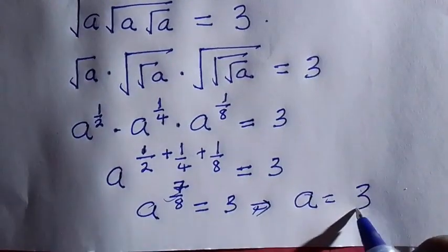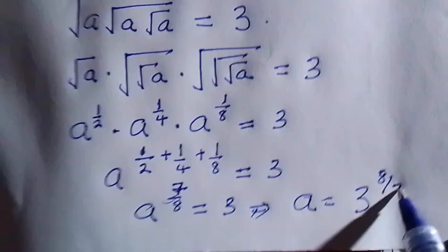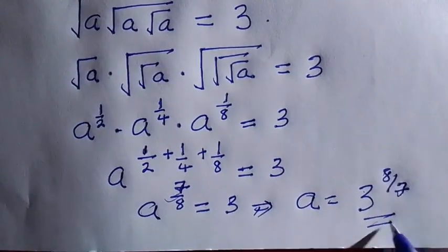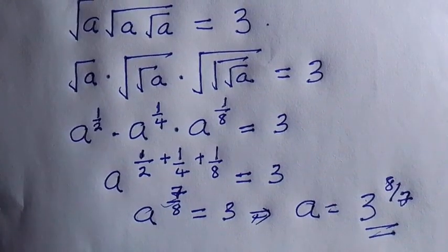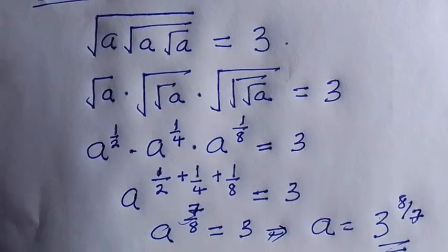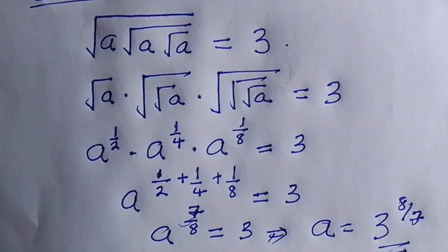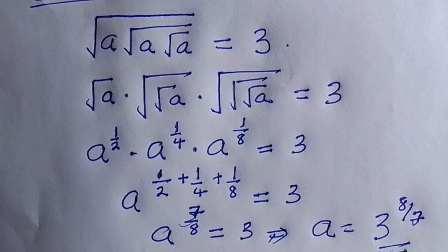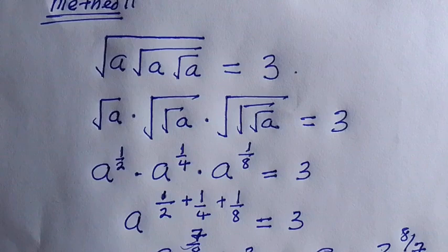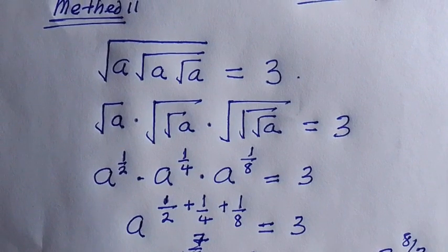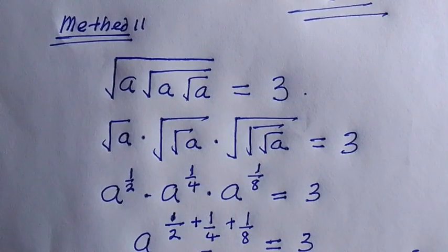So when we find the LCM here, which is 8, and do the necessary evaluation, we get a to the power of 7 divided by 8 equals 3. Then we raise both sides to the power of 8 divided by 7. By doing that we have a equals 3 raised to the power of 8 divided by 7. So we get the same result as the first method.